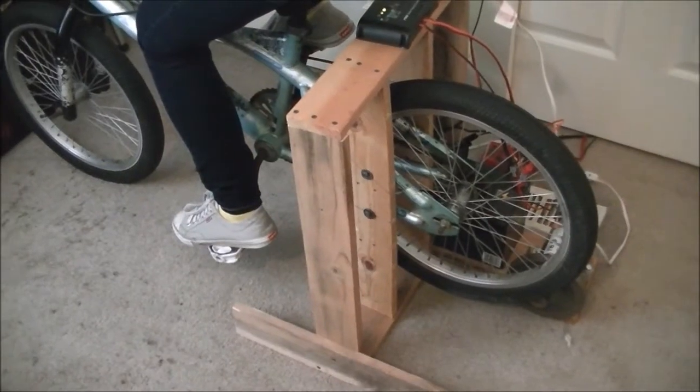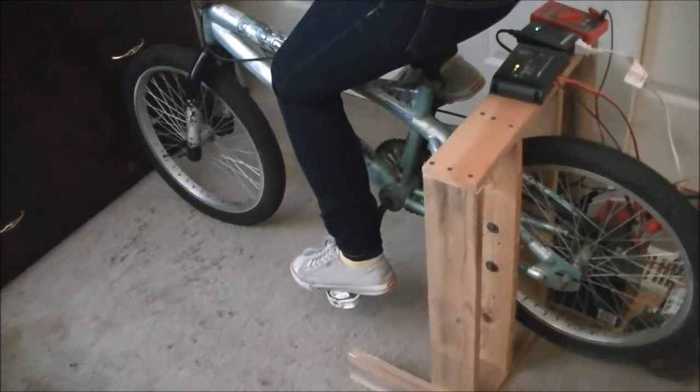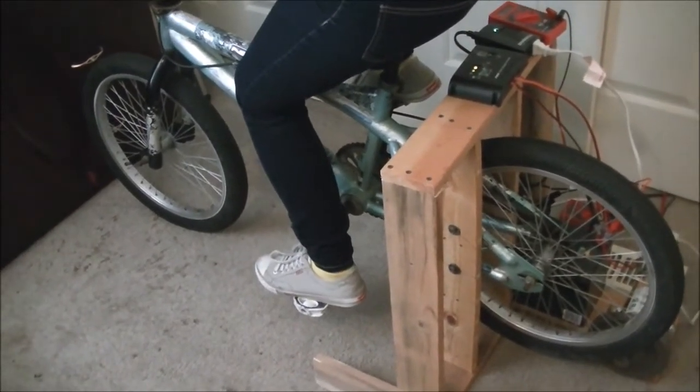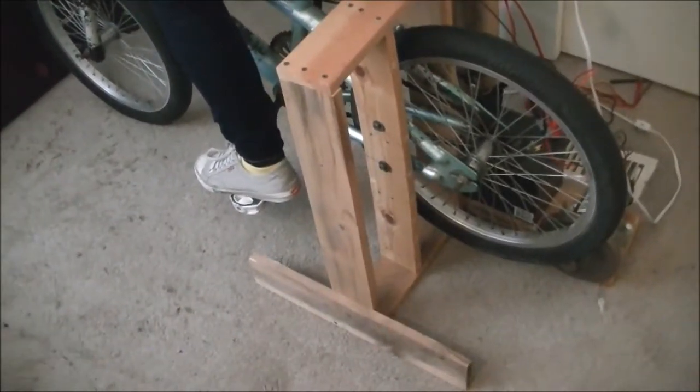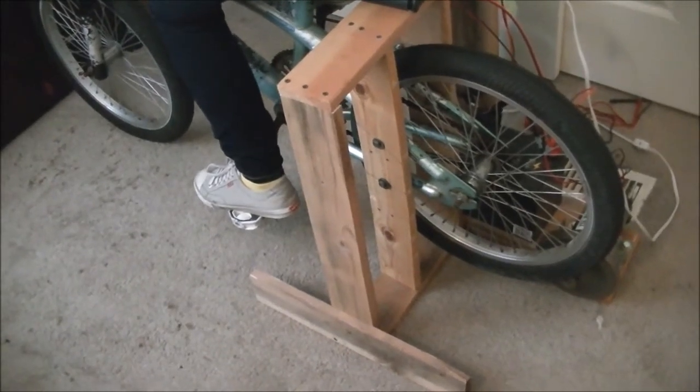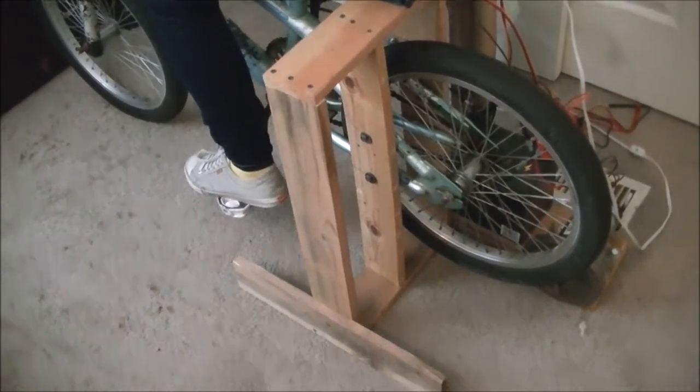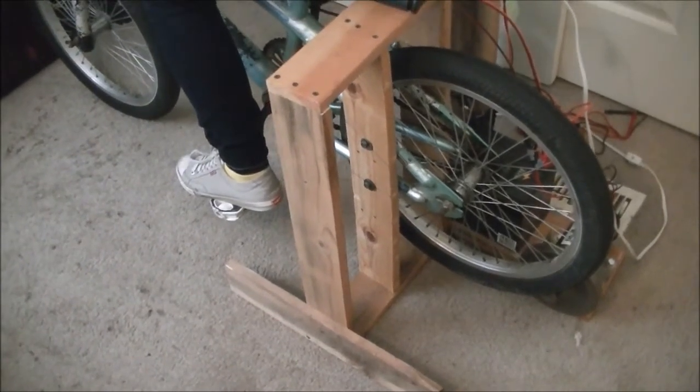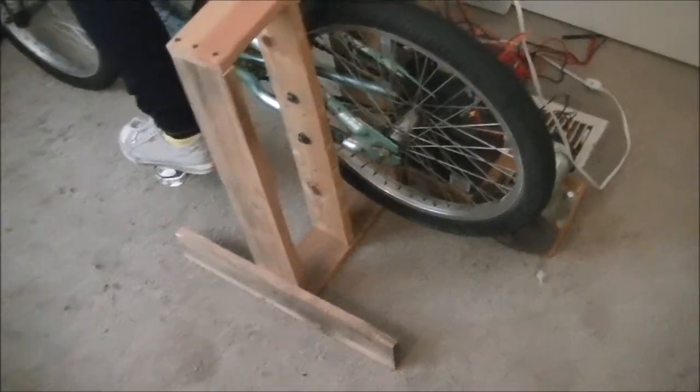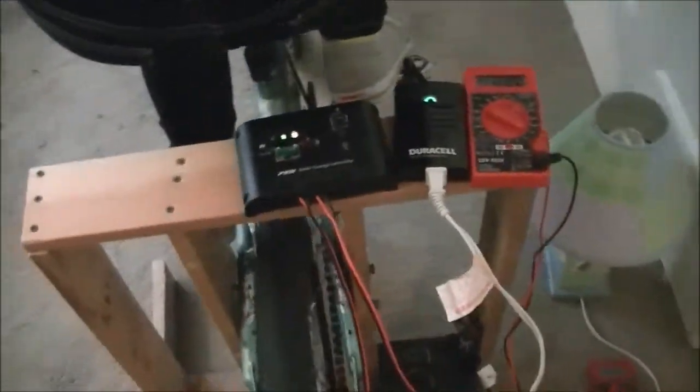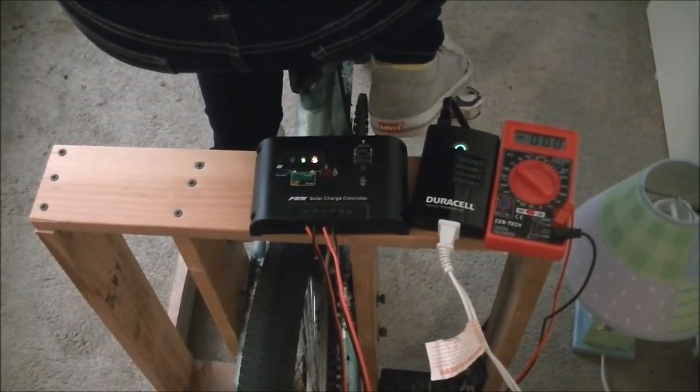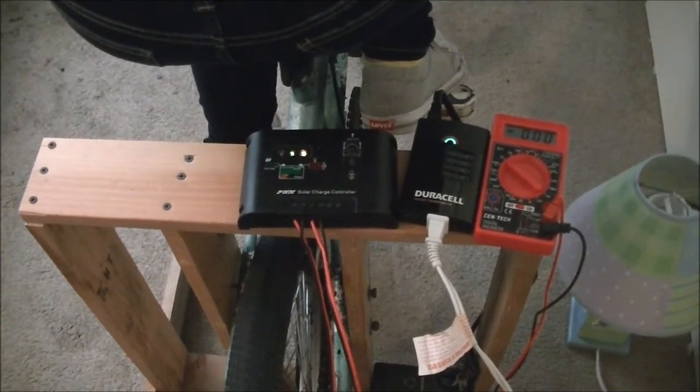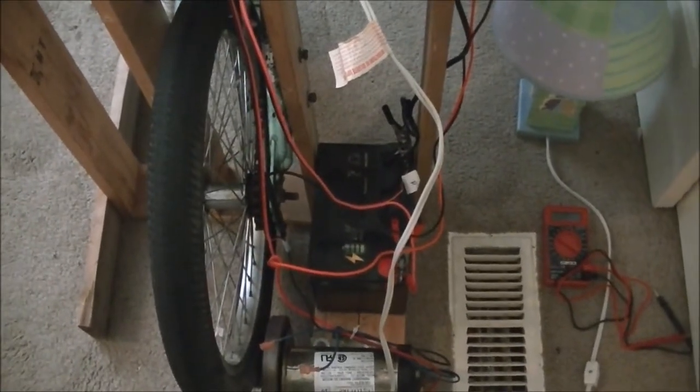This whole setup here - I paid $7 for that bicycle at a yard sale, and I had this scrap wood hanging around and I cut it with a handsaw, so you don't even need power tools or anything to make this, although I did use an electric drill. That charge controller I paid about $15 for on eBay - you need to look around for them, but you can get them pretty cheap. And that battery I guess is probably about $35.